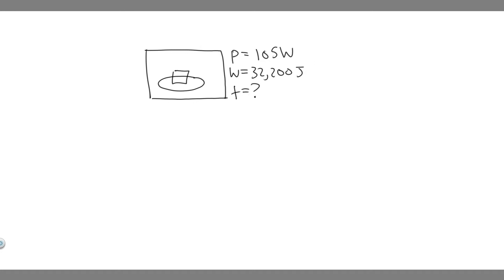What we're told in this problem is that the power is going to be equal to 105 watts - that's what the oven will deliver. We know the work done is going to be 32,200 joules because that's how much work it takes to melt it. What we're trying to find is how long this takes, or the time.